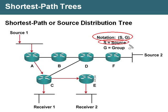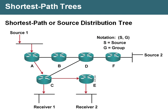So in this case, if source-1 was 192.168.1.1 and the group was 224.1.1.1, the notation would be 192.168.1.1, comma, 224.1.1.1.